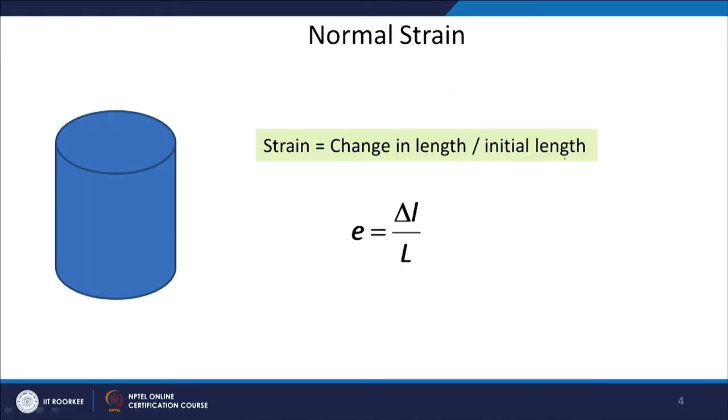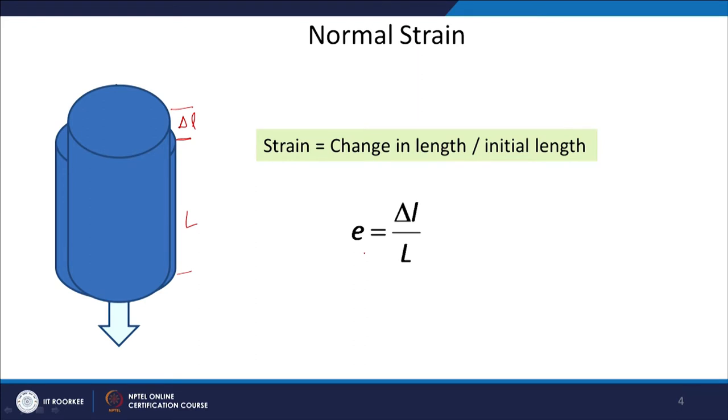Similarly, there can be strain. Strain is basically change in length divided by initial length. Any change in length divided by initial length equals strain. When you apply a force, the initial length L changes by delta L. The strain is delta L divided by L, and that is equal to the normal strain — because we are measuring the strain on the area normal to the stress.